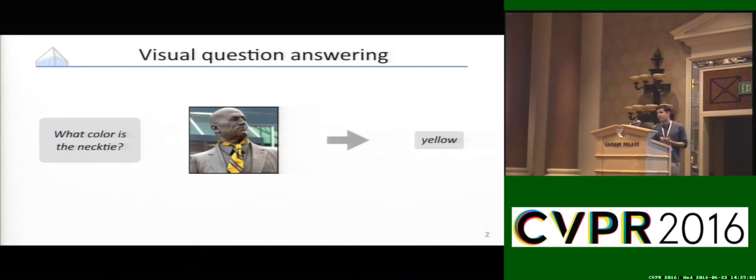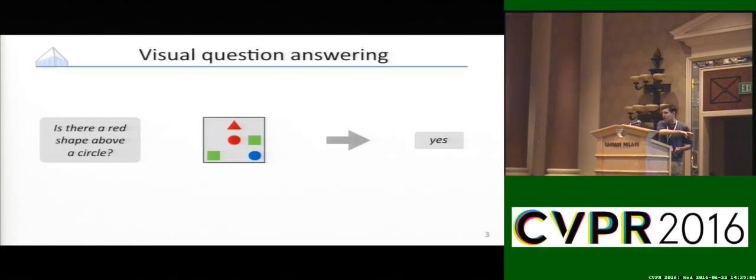We're going to be looking at experiments on natural images today, but for pedagogical reasons in this talk, we're also going to be looking at examples from a little data set of abstract scenes involving colored shapes that look like this.